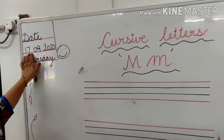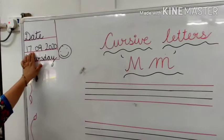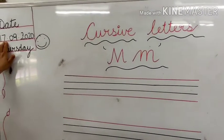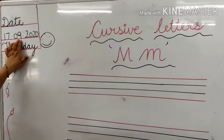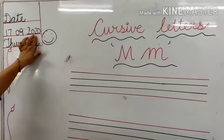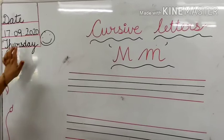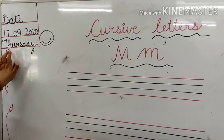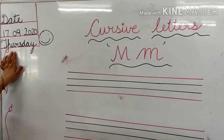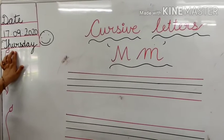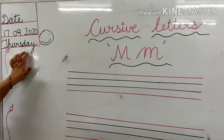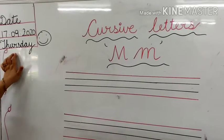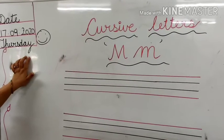You will write down the date here. Today's date is 17 September 2020 and the day is Thursday. Spelling of Thursday is T-H-U-R-S-D-A-Y. Clear.